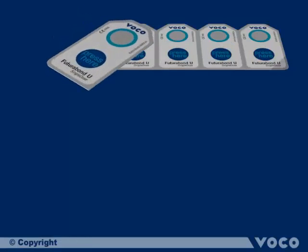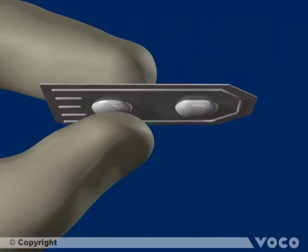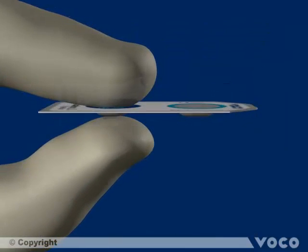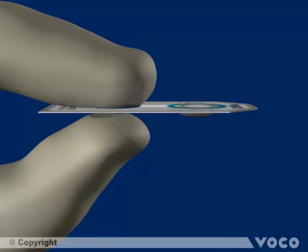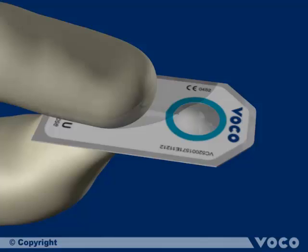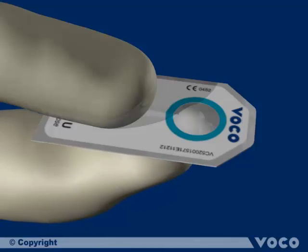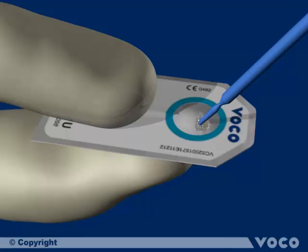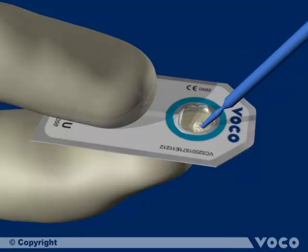Activation of the Futurabond U blister by pressing firmly between thumb and forefinger. Breaking the seal of the protective foil with an applicator, mixing until the liquid is homogeneous and completely wets the applicator.